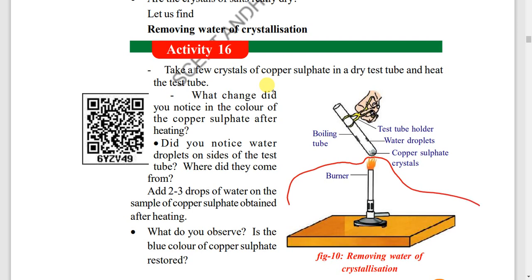Copper sulfate color changes from blue to white when water is removed. When water is added back, it turns blue again — this is an easy observation.